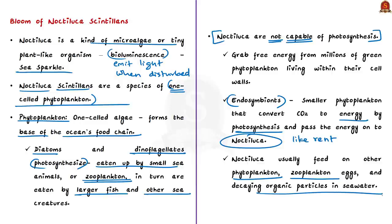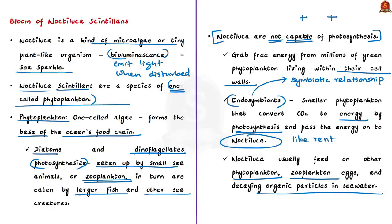Endosymbionts are organisms that form a symbiotic relationship with another cell or organism. Some endosymbionts are found inside cells — called intracellular — while others are attached to the surface of cells, called extracellular. As we know, symbiotic relations refer to those relationships in which both parties benefit.